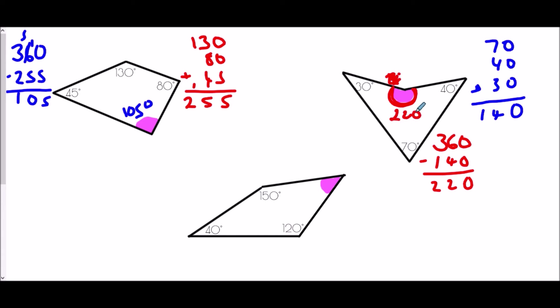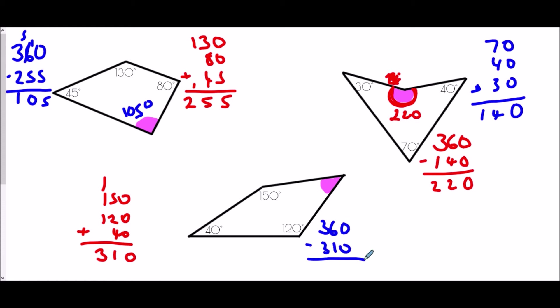Finally for quadrilaterals, we have a 150 degree angle, a 40 degree angle, and a 120 degree angle. Adding: 5 plus 2 is 7, plus 4 is 11 — so 310 degrees. To find the missing angle: 360 take away 310 leaves 50. So the missing angle here is 50 degrees.